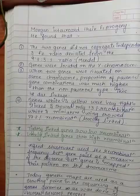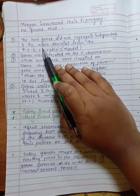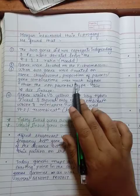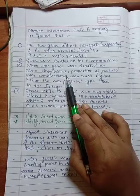Morgan intercrossed their F1 progeny. He found that the two genes did not segregate independently and the F2 ratio deviated from the 9:3:3:1 ratio which was given by Mendel. Genes were located on the X chromosome, and two genes were situated on the same chromosome. The proportion of parental gene combination was much higher than the non-parental type. This is due to linkage.